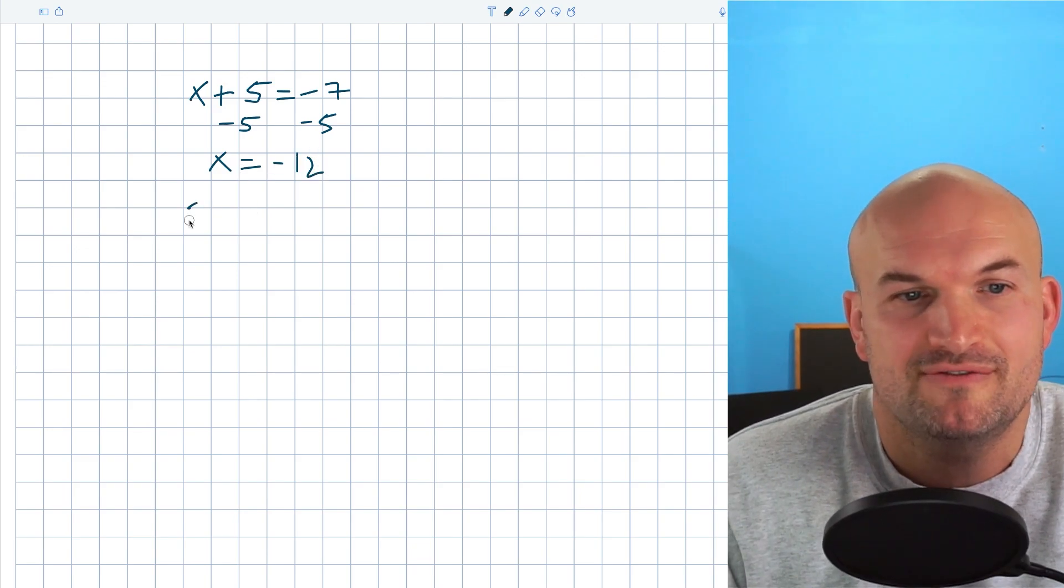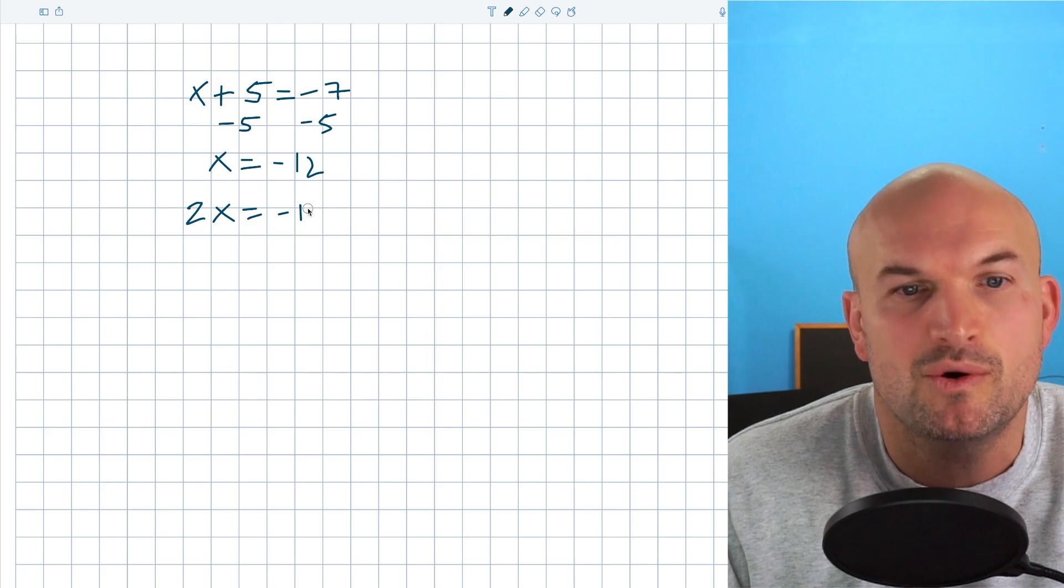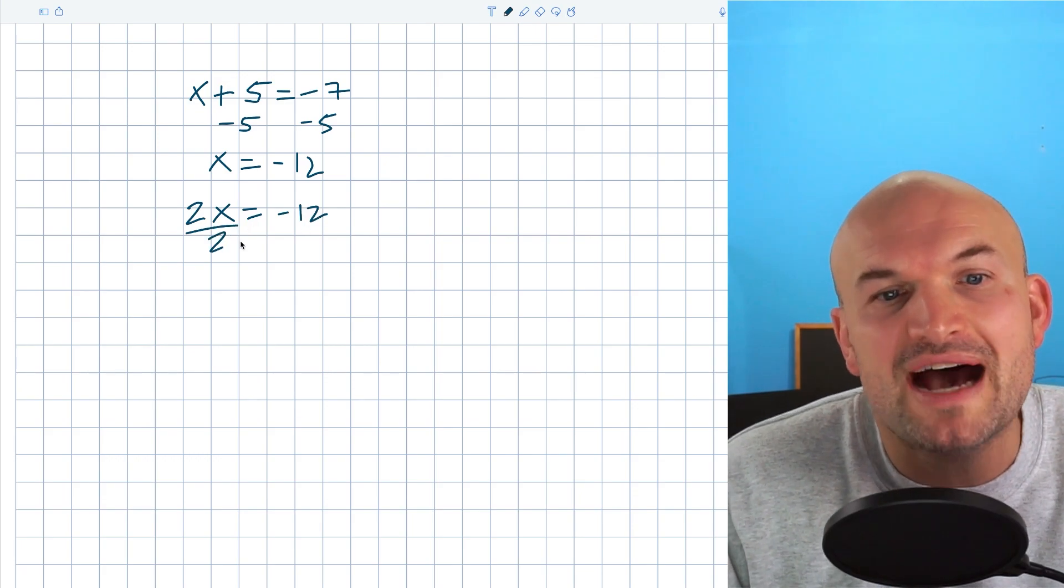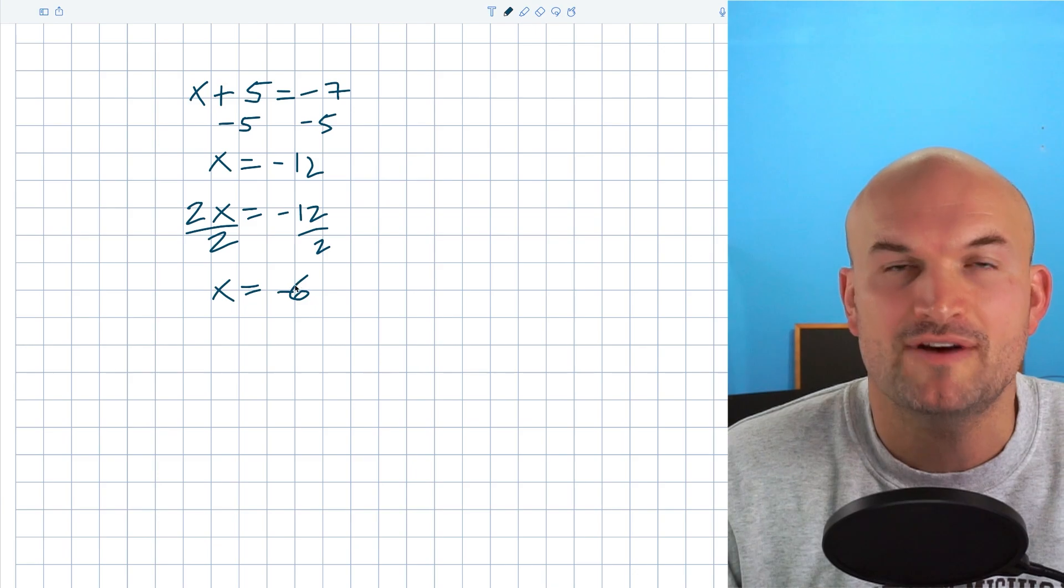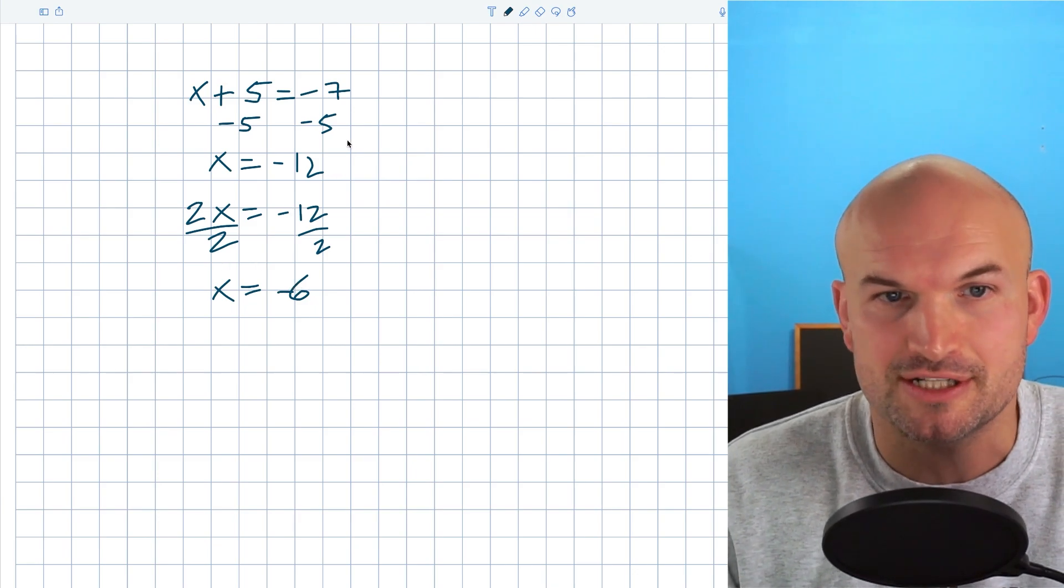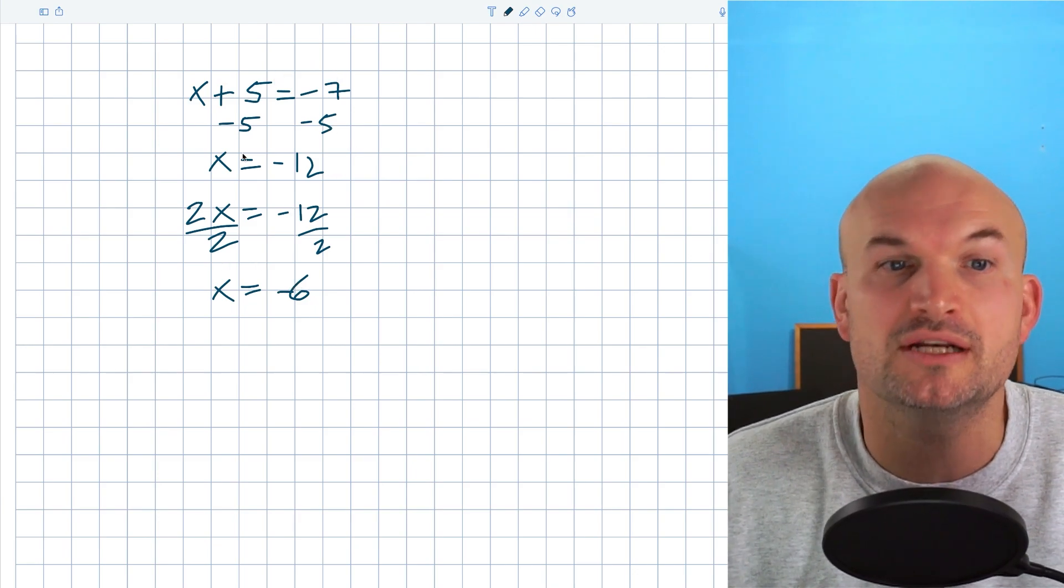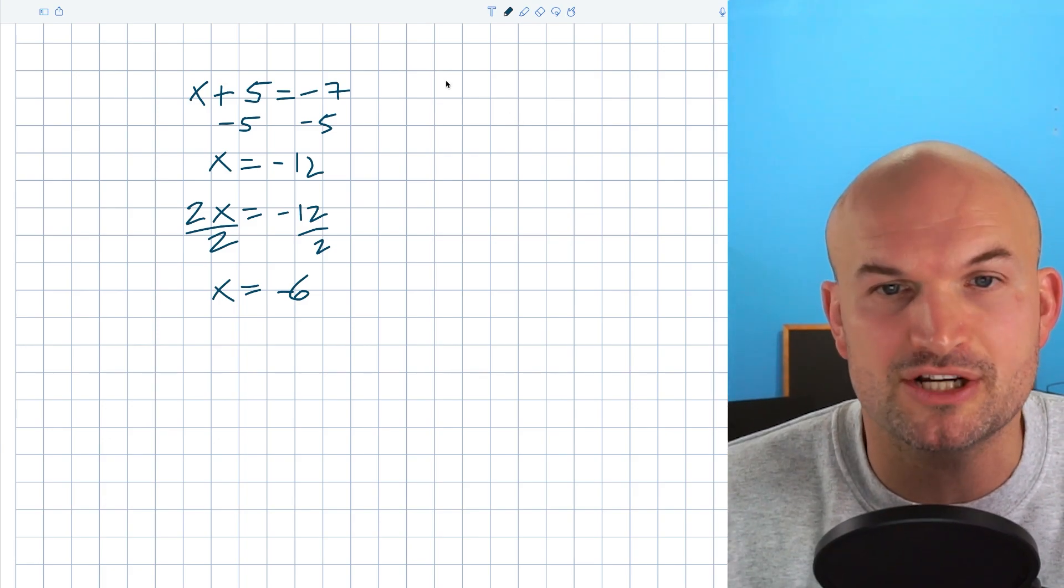And the same thing when we had multiplication, if I had 2x equals negative 12 and I said solve for x, well, then you divide by 2. We undid what was happening to our variable. Those are what we call our inverse operations. So we did this with addition, subtraction, multiplication, and division. Those are our inverse operations.